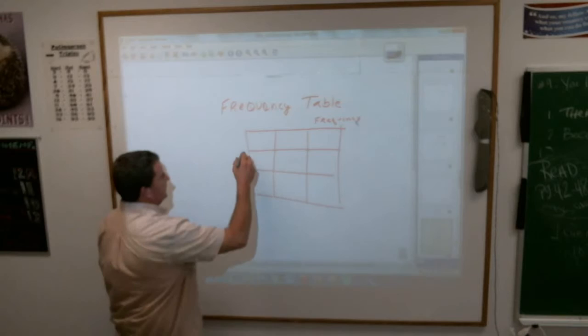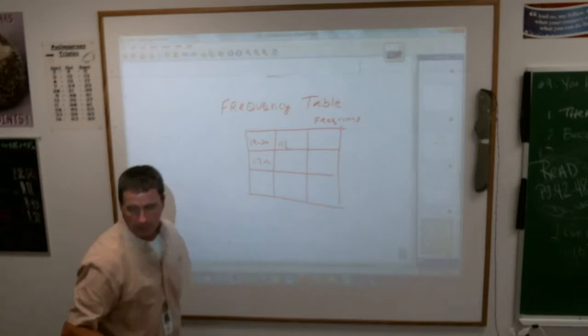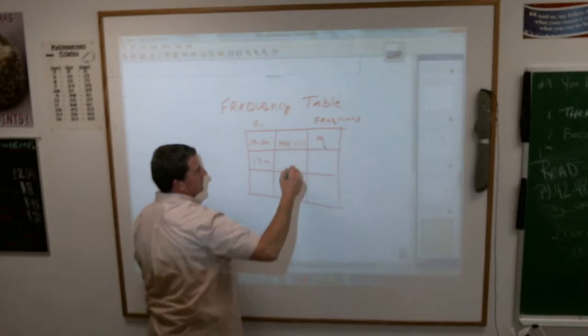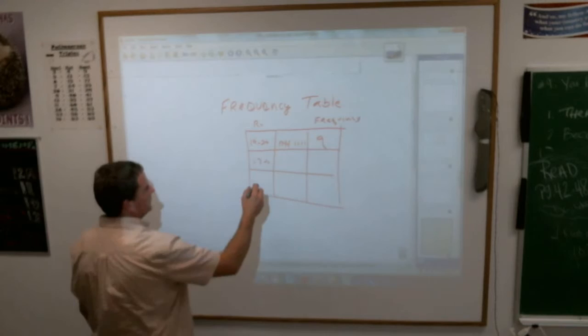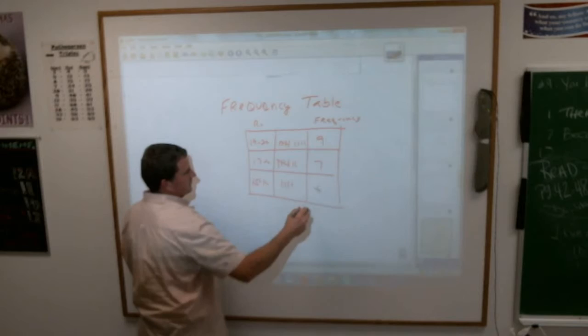Like this person, like the little graph there, they did the number correct. There was 19 to 20, 17 and 16, whatever it was there. And they used the tally marks to show the number of people. The tally marks gave us nine. So the frequency, how many times did, or how many people got 19 or 20 right, was nine. How many people got 17 to 18 right? That is the frequency of seven. How many people got 15 or 16 right? The frequency is four there.